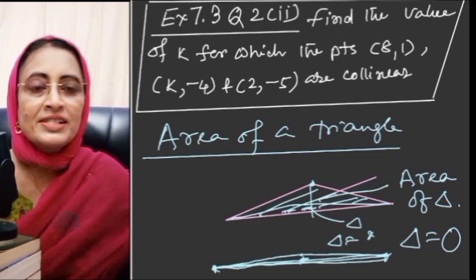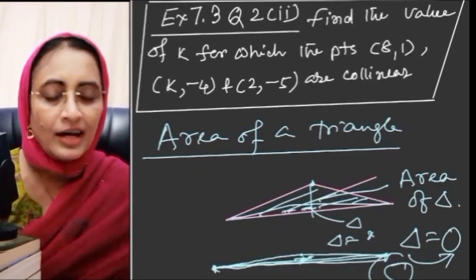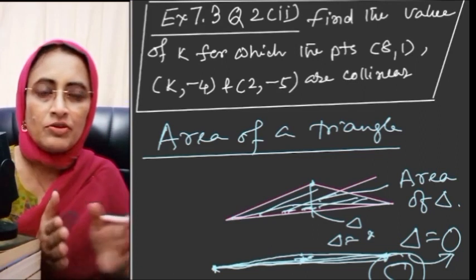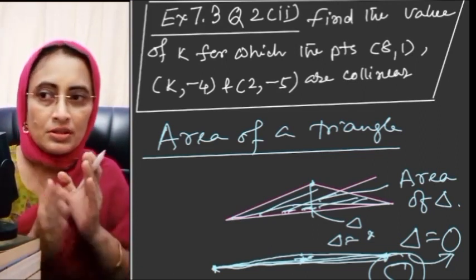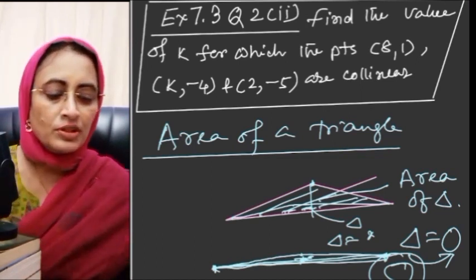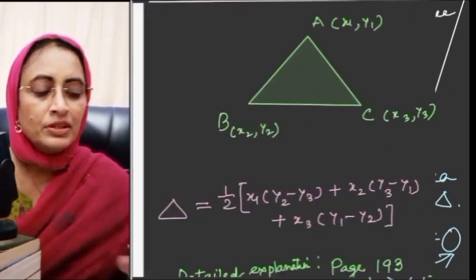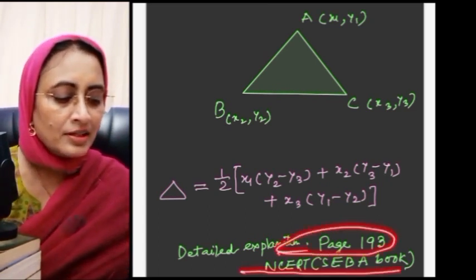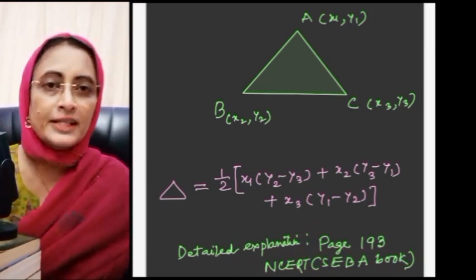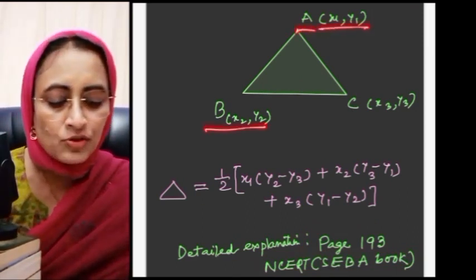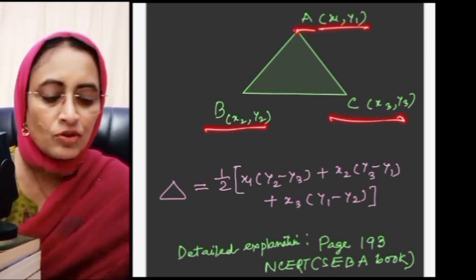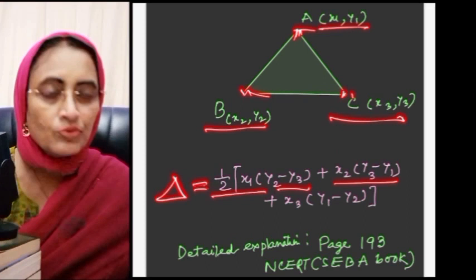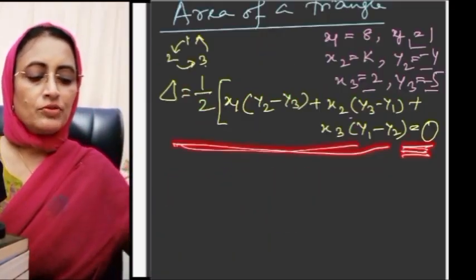This section is for SEBA students only. The formula is: if A(x1, y1), B(x2, y2), C(x3, y3) are the vertices of a triangle, then area = half into |x1(y2 - y3) + x2(y3 - y1) + x3(y1 - y2)|. Our formula is equal to 0 for collinear points.